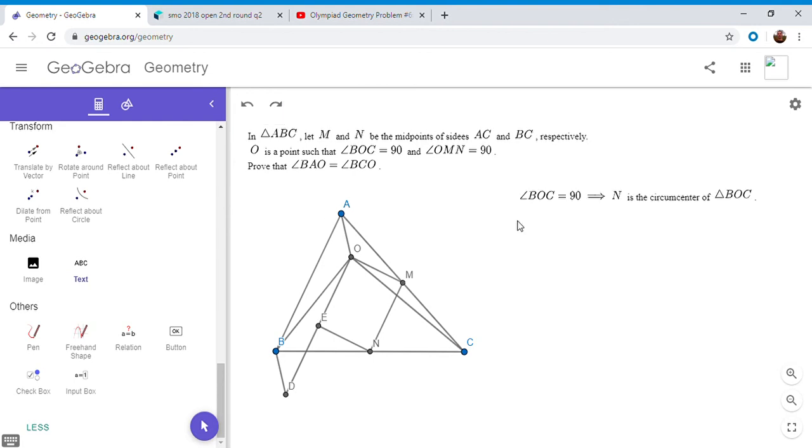Okay, so this is what I mentioned before. Angle BOC is 90, so N is the circumcenter of BOC. Now, we want to show that D also lies on the circumcircle of BOC.